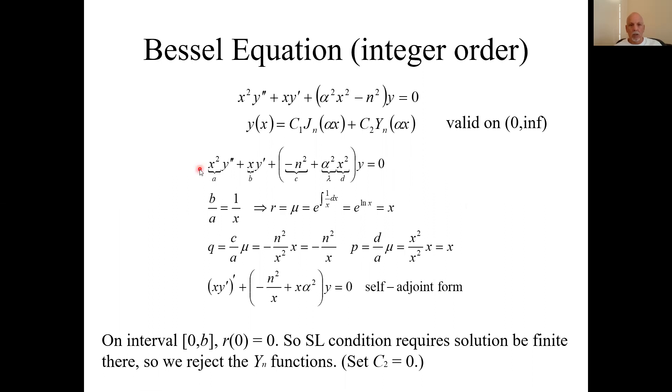So taking the Bessel equation, here's the A, it's the x squared. B is x. C is minus n squared. Lambda would be alpha squared and x squared would be the B function. We need to evaluate this little thing here, e to the integral of 1 over x dx. Well, actually B over A, and B over A is x over x squared, which is 1 over x.